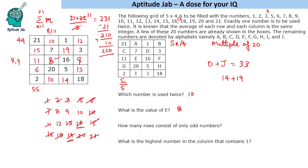The next question is how many rows consist of only odd numbers? There is only one row which has only odd numbers. What is the highest number in the column that contains 1? 1 is in this column, so the highest number is 19.